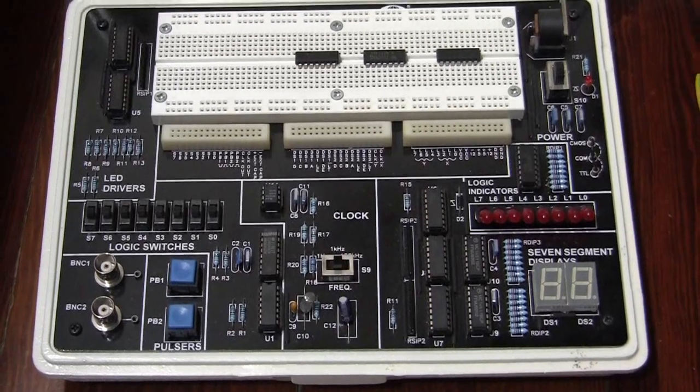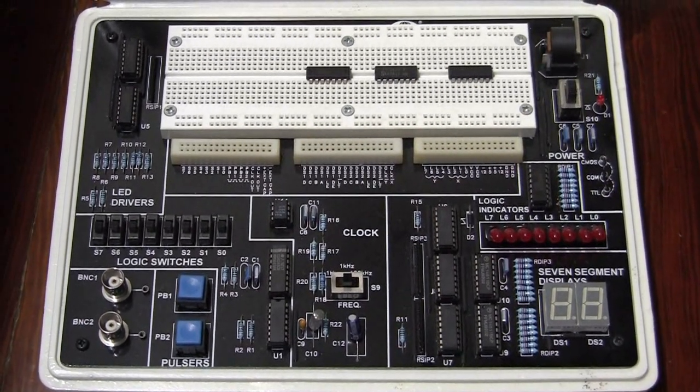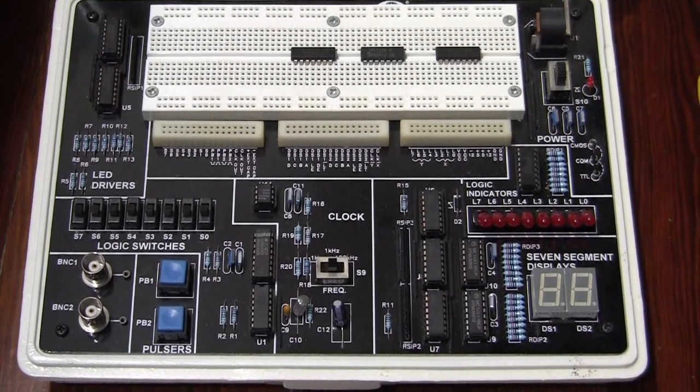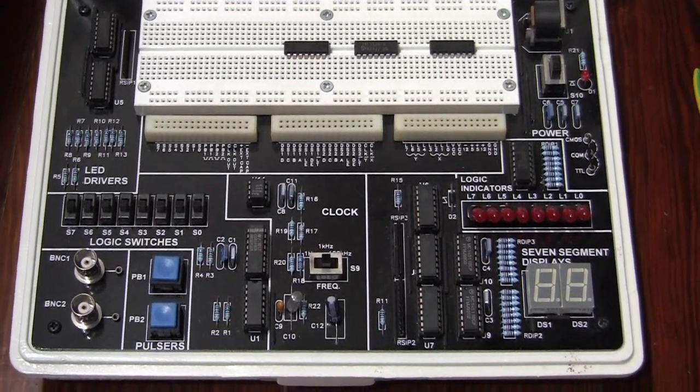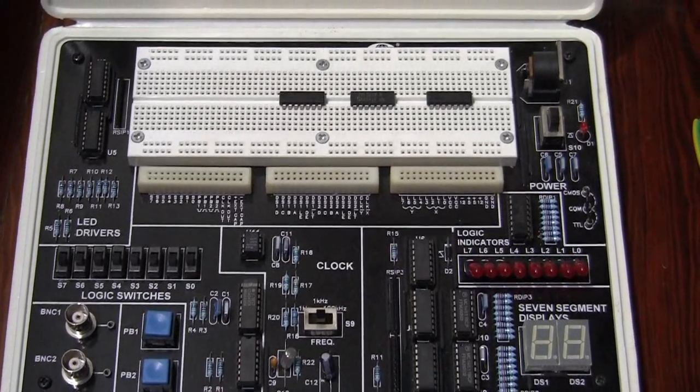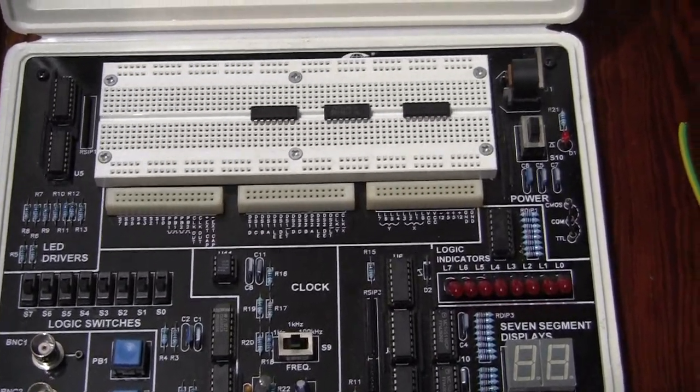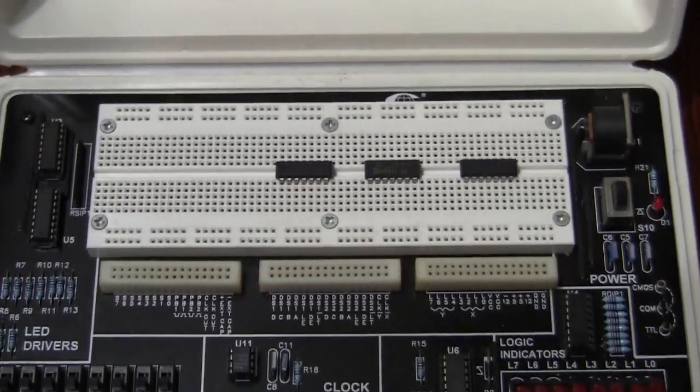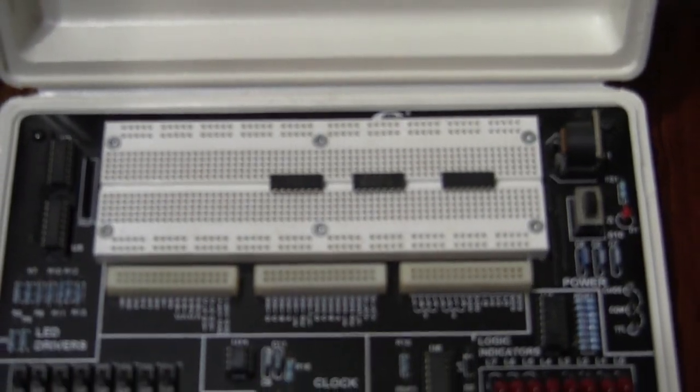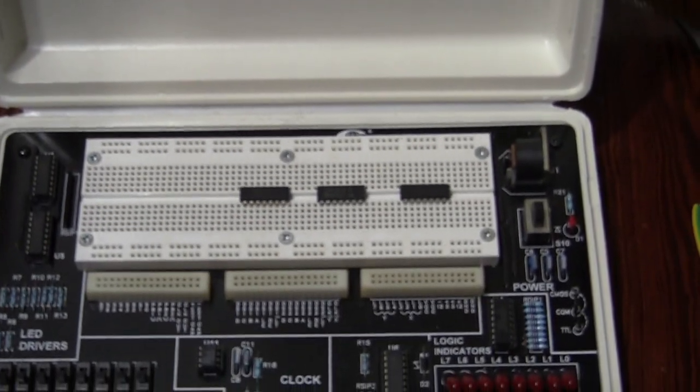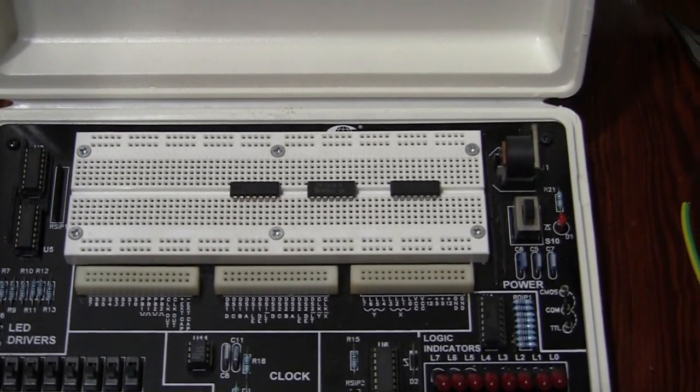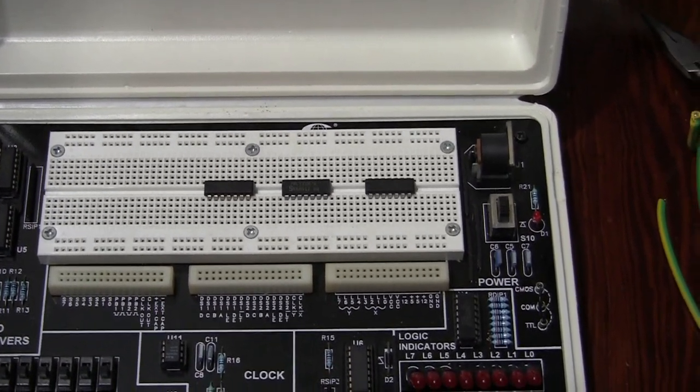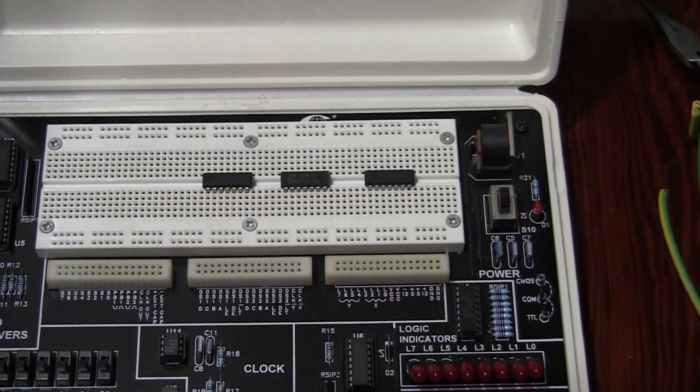The logic trainer known as the pencil box provides a convenient way, particularly with combinational logic circuits, to provide input and output to the circuit. And it has the conventional breadboard even though the rails are not marked with red and blue lines. So we have our three ICs arranged in the same sequence: the NOT gate, followed by the AND gate, followed by the OR gate.